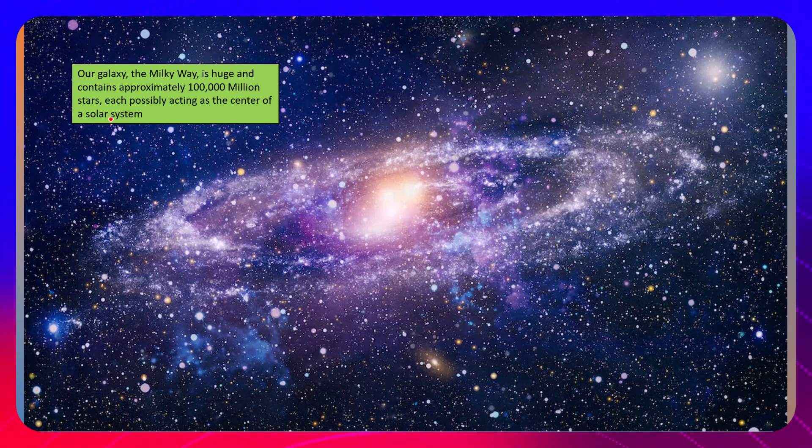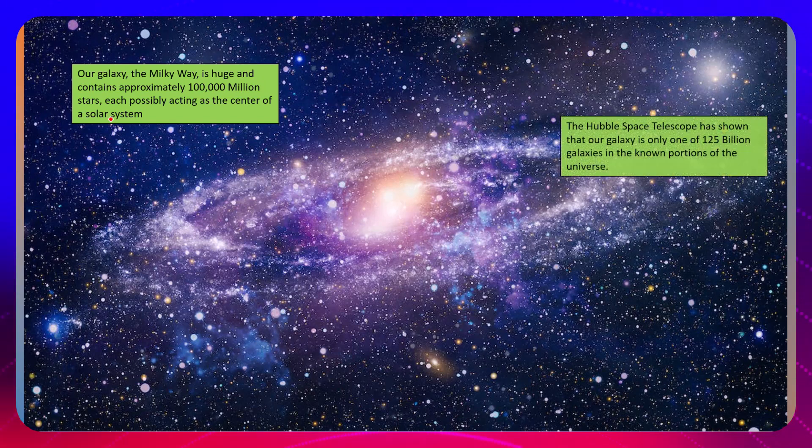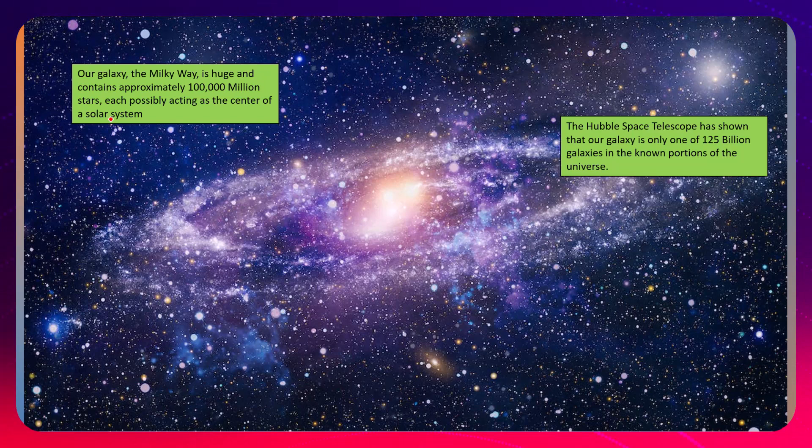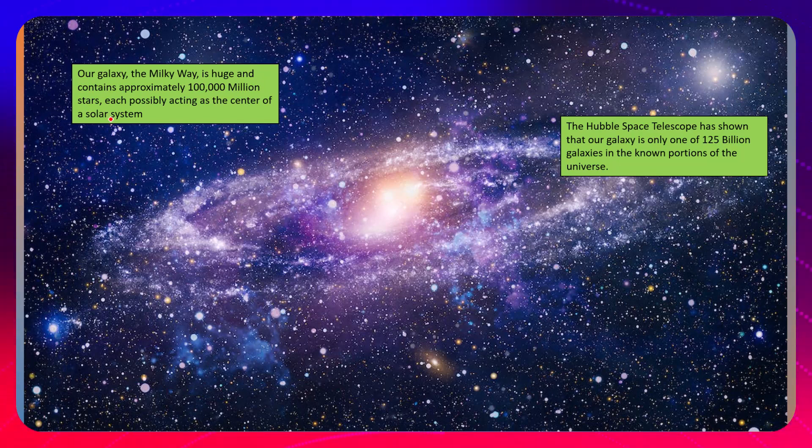The Hubble Space Telescope has shown that our galaxy is only one of 125 billion galaxies in the known portions of the universe, meaning we don't even know all portions of the universe. We just know that of the portion of the universe we know, there are 125 billion galaxies.